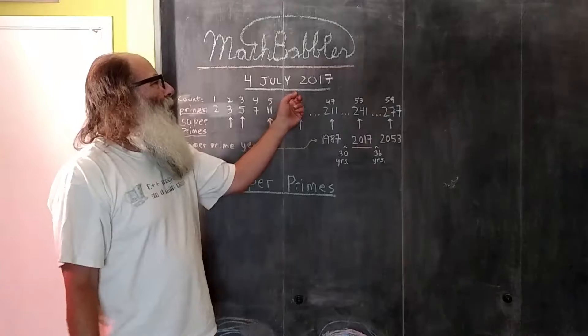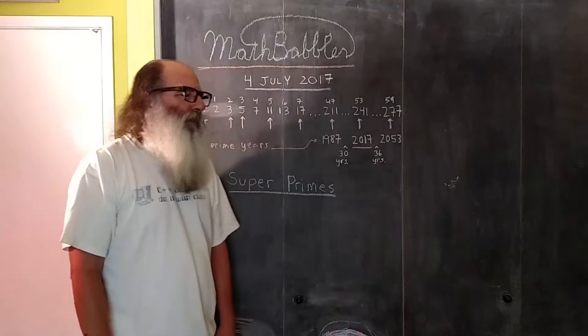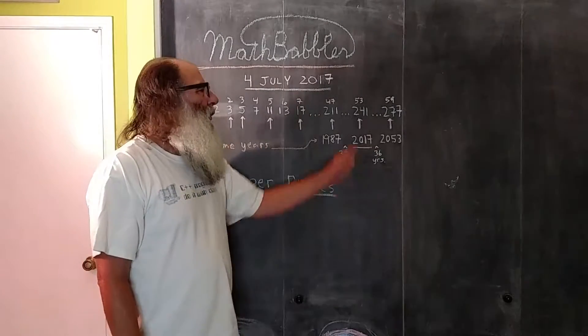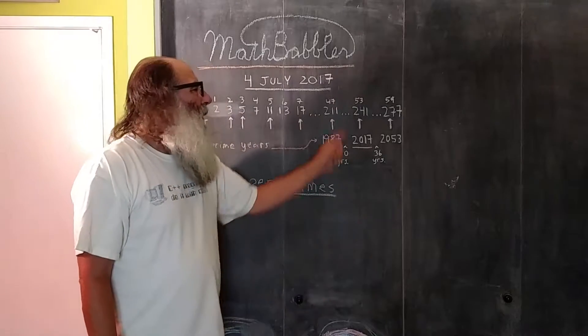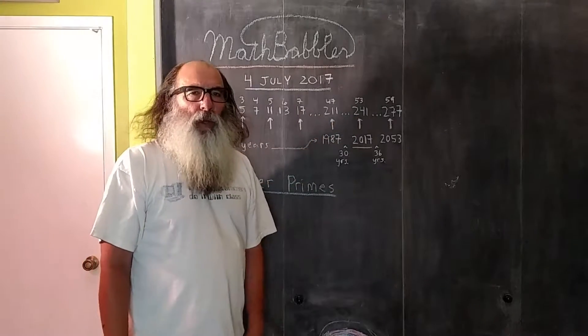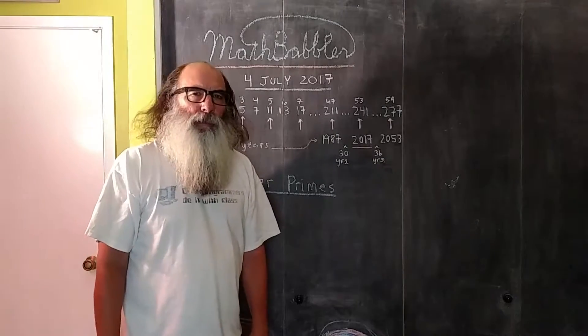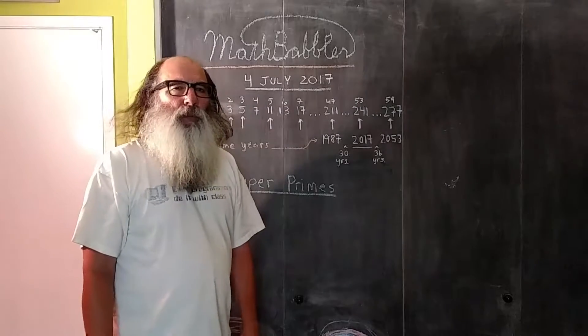Hello, it's July 4th, 2017. I'm doing a Math Babbler bit today. The United States turned 241 years of age. 241 is a prime number, but more than that, it's a super prime. What makes a prime number a super prime?